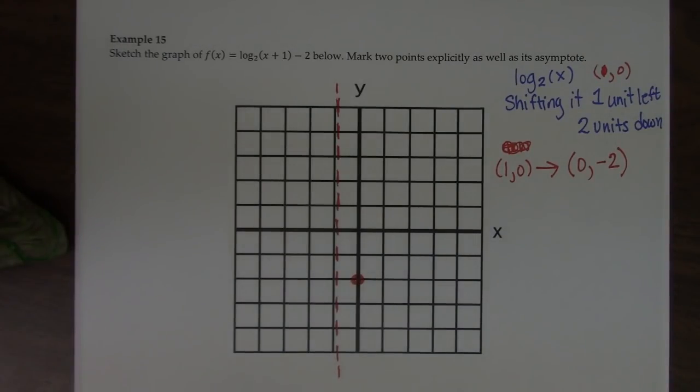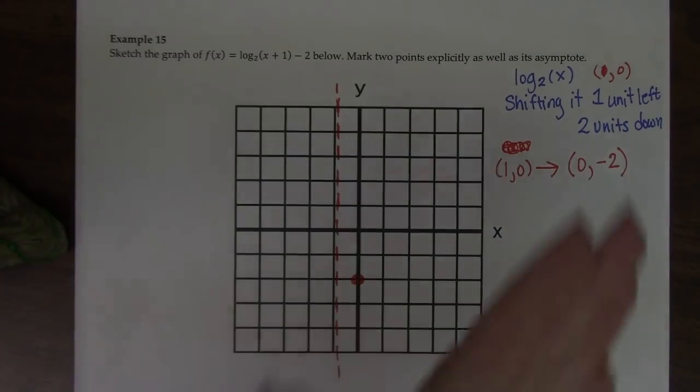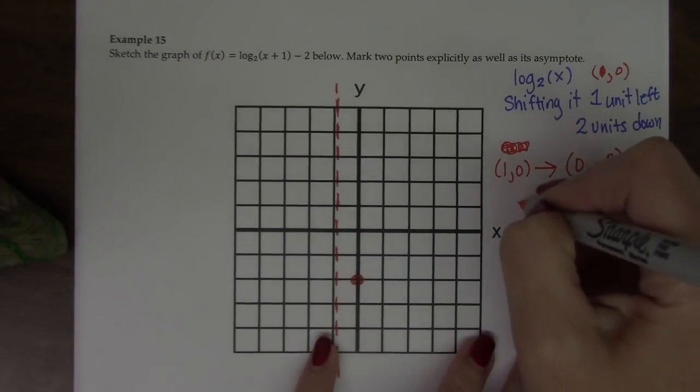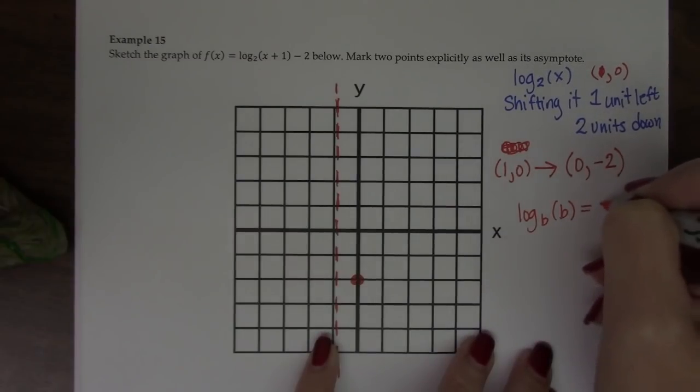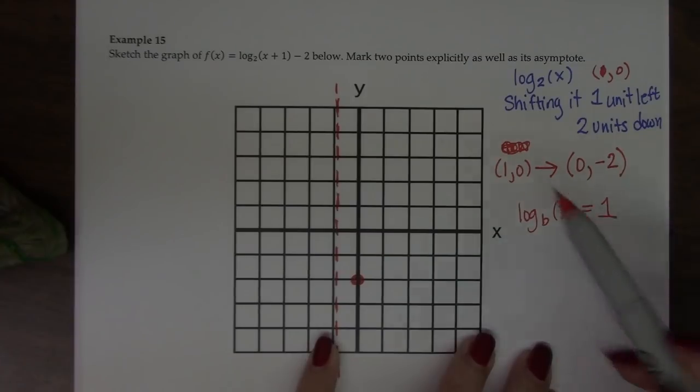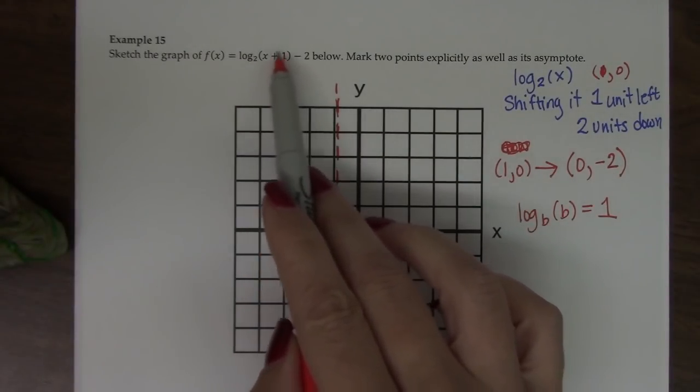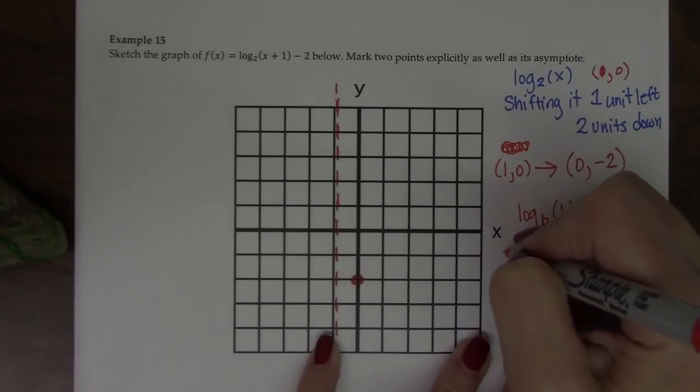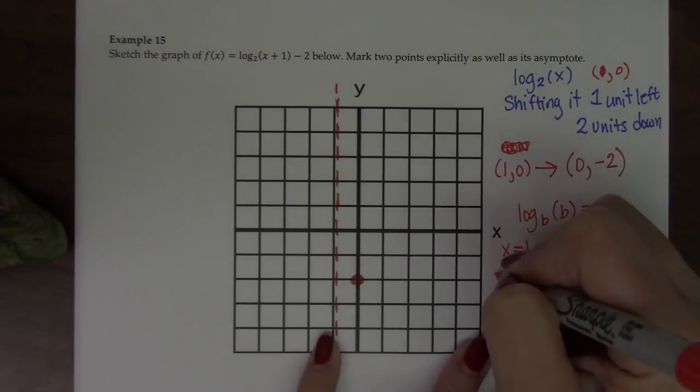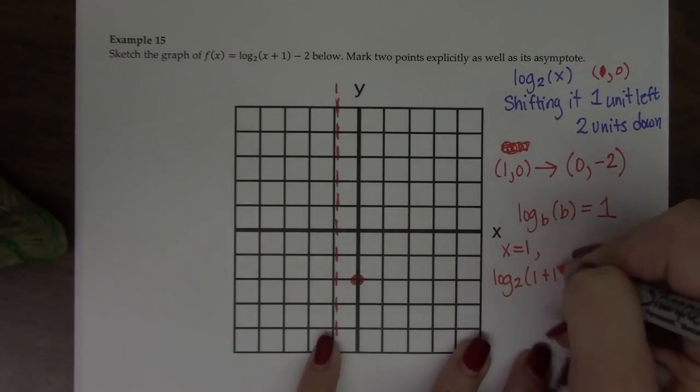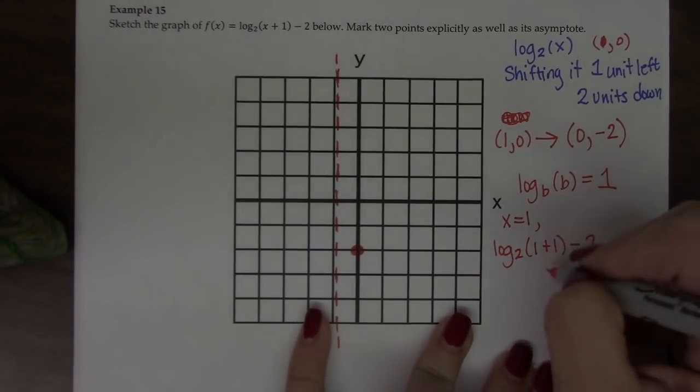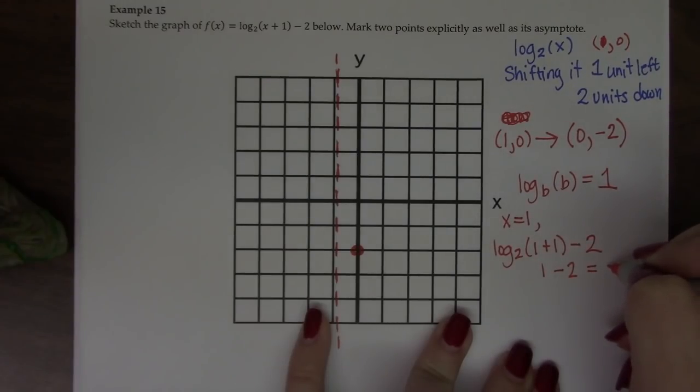Now it asks me to mark two points. So we actually want to take advantage of the base of this log to find the second point. I also know that log base b of b equals 1. So the question is, what value of x can I plug in here to ensure that I get a 2 inside of there? And the answer is going to be 1. So if x equals 1, then I get log base 2 of 1 plus 1 minus 2. Well, log base 2 of 2 is 1, and 1 minus 2 is negative 1.